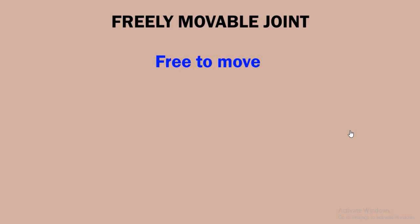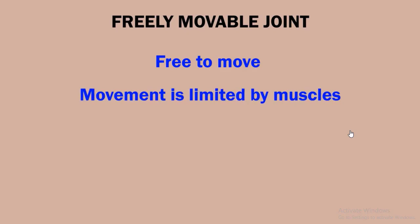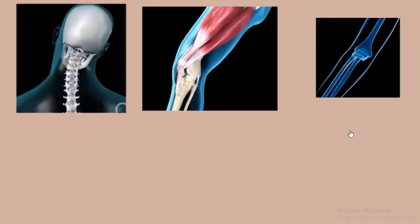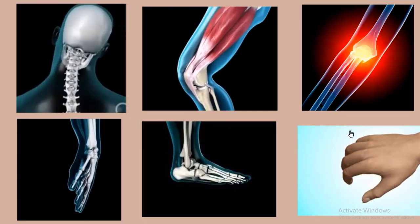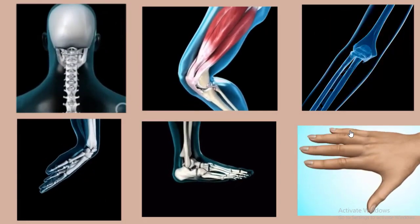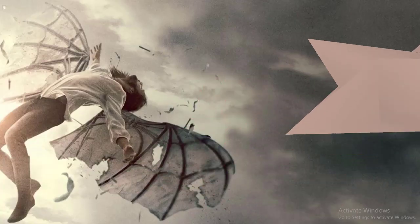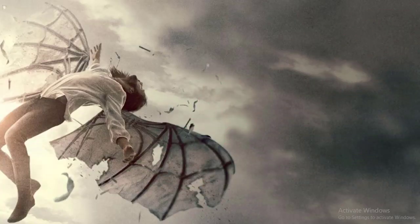Freely movable joints are free to move or move in different directions, like circular movement. Movement is limited by the muscles — the muscles help the bones to move. Thanks for listening and watching.